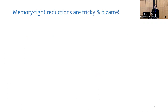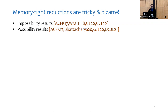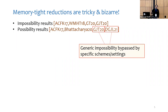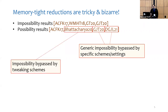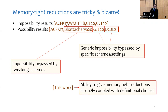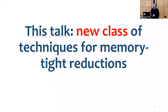Memory tightness has been studied quite a bit over the last several years. There have been impossibility results as well as techniques to make reductions memory tight. But the landscape of results is a bit strange, because there have been examples of generic impossibility results being given and then later bypassed by considering specific schemes or settings. Even impossibility results tailored to specific schemes have been shown to be bypassed by slightly tweaking the schemes. In this work, we show that the ability to give memory-tight reductions depends a lot on definitional choices, which motivated us to increase the toolkit for making reductions memory tight. We introduce a new class of techniques that will make several different reductions memory tight.